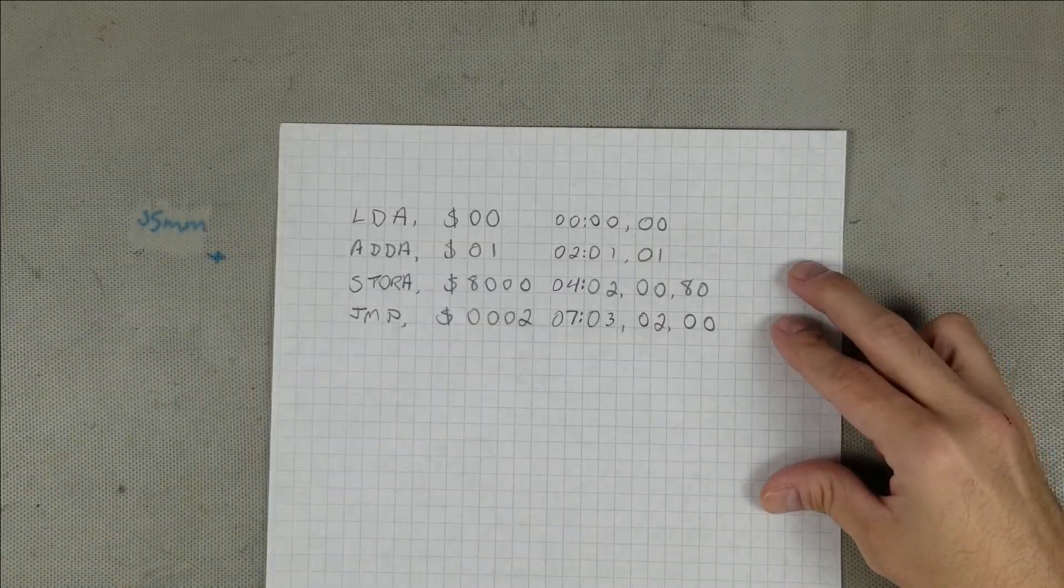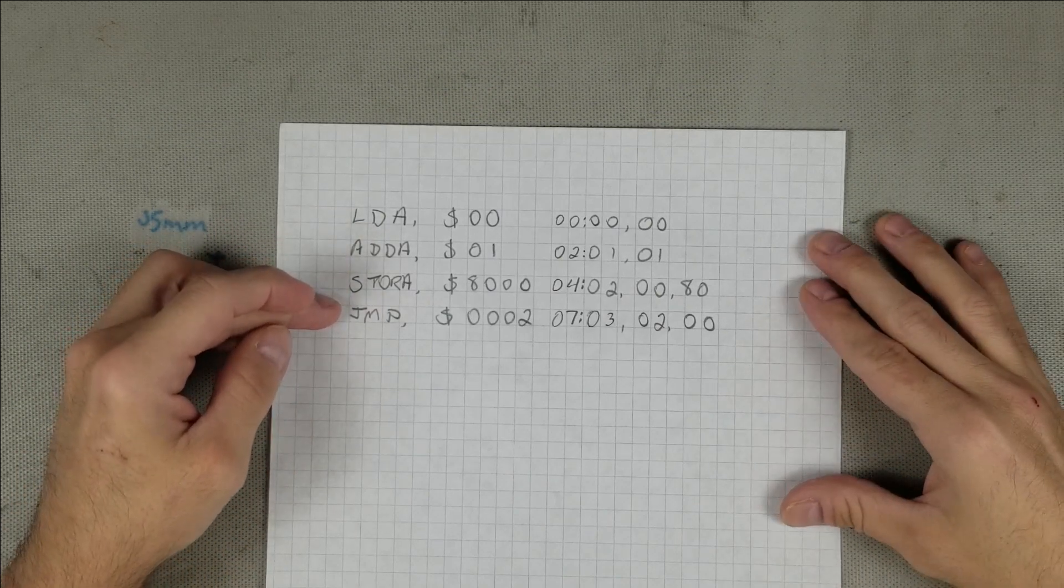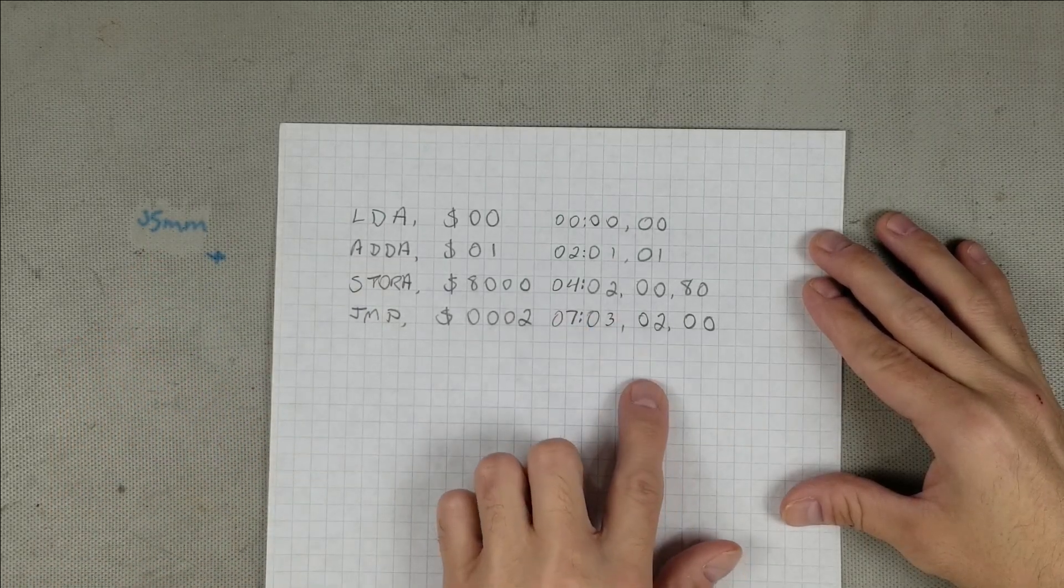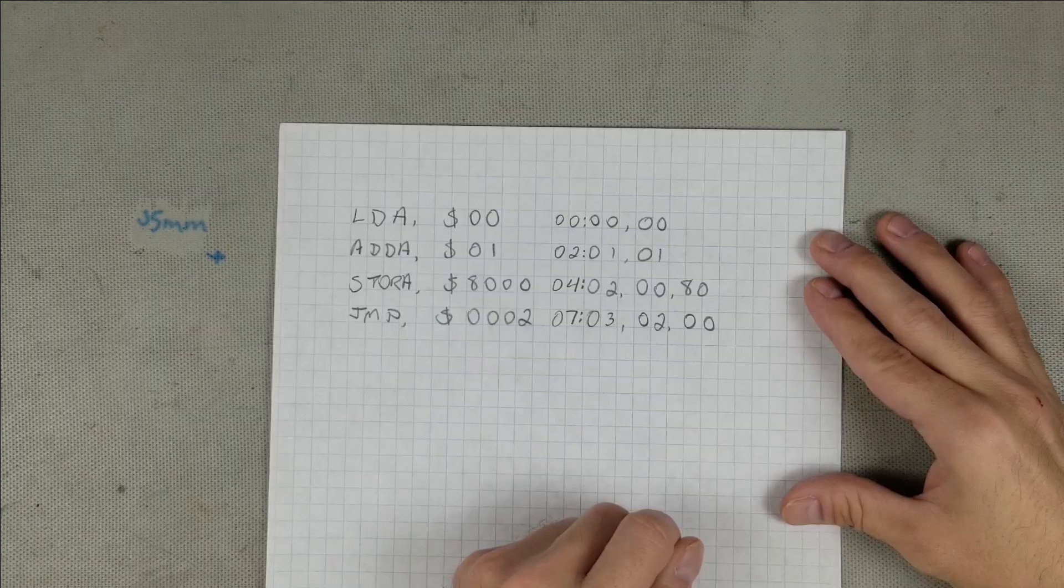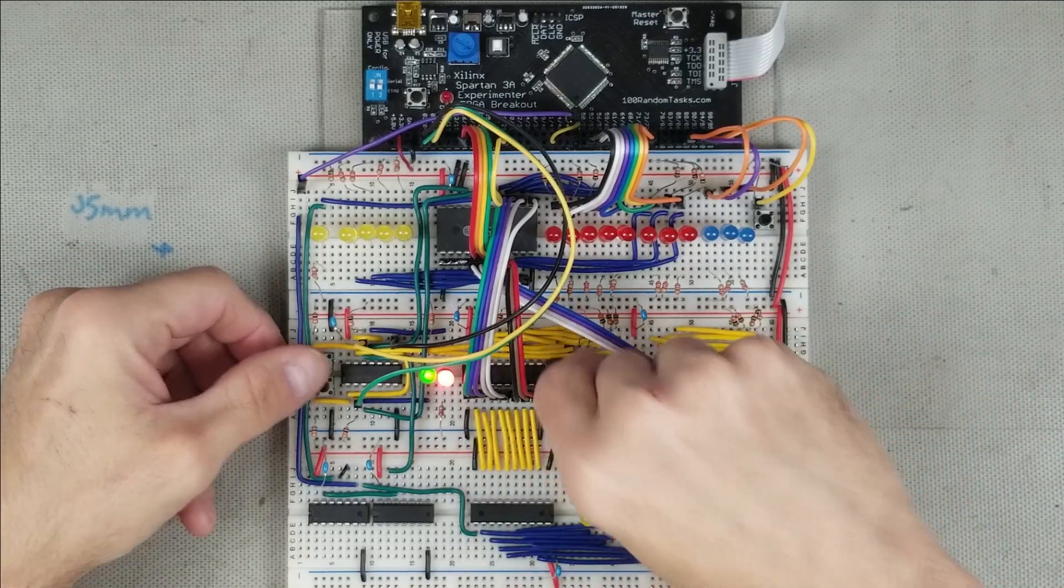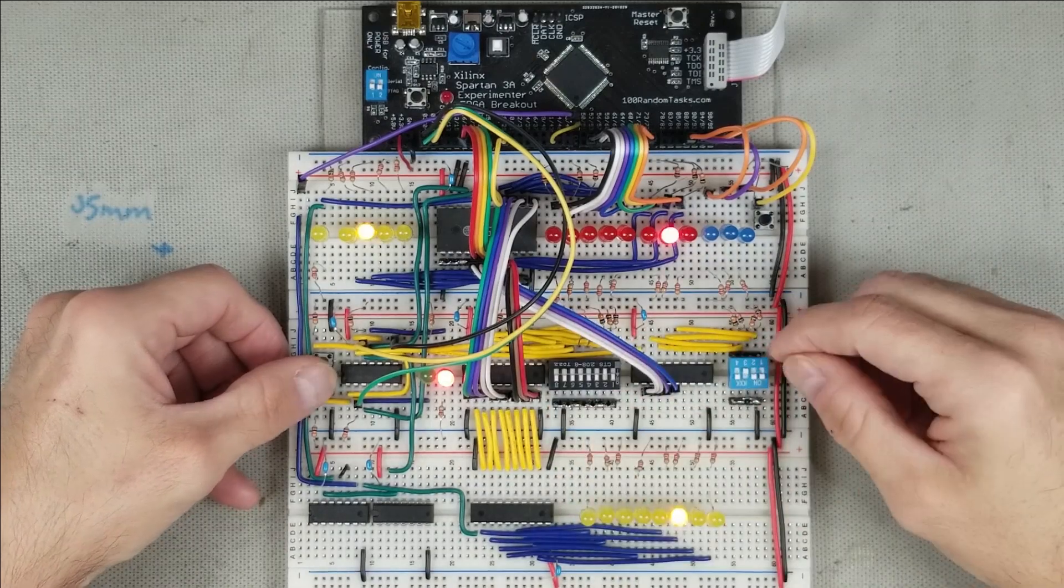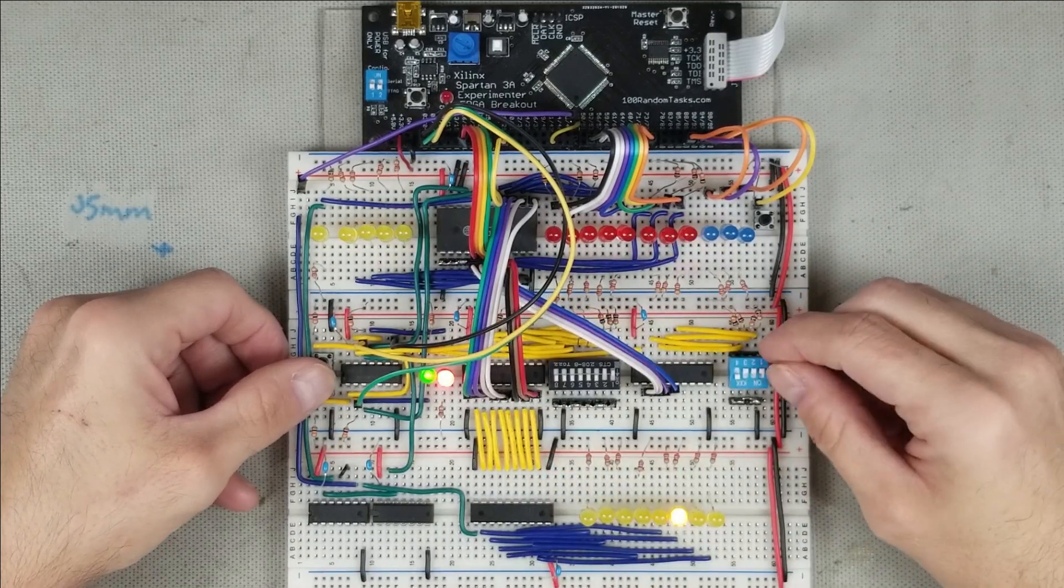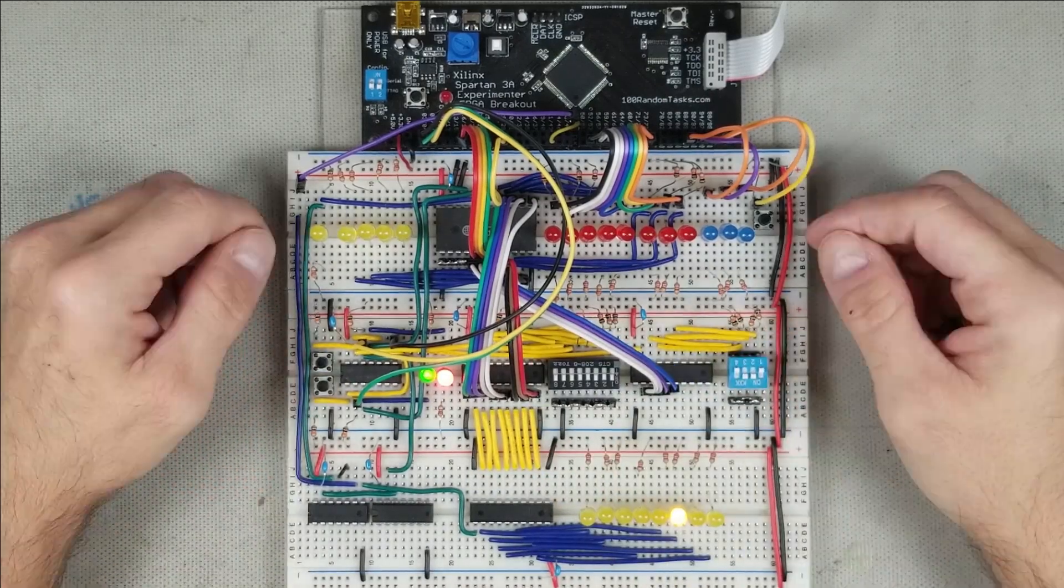The first two instructions remain the same, but the store and jump instructions have 16-bit operators, making the program 2 bytes longer for 10 bytes. The disassembly shows this with the operator for both in little endian format. With the updated program in hand, let's program it and see if it works. The Spartan is programmed and ready to go, so I'll input the new program into RAM.